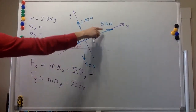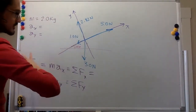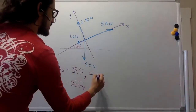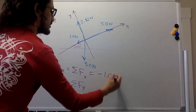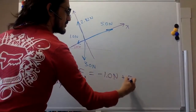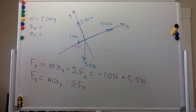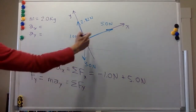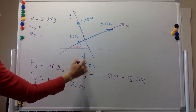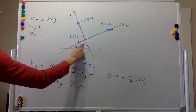For x, we have 5.0 newtons. Starting with the negative ones: this is negative 1.0 newtons. And this one is positive 5.0 newtons. Oh, we have another one over here — this component, which is negative. Let's take a look at that one.